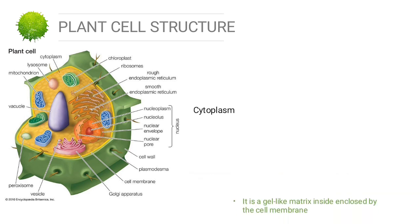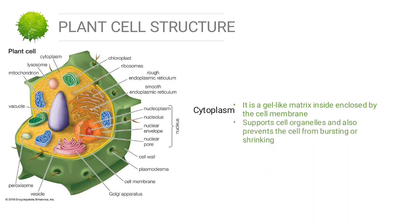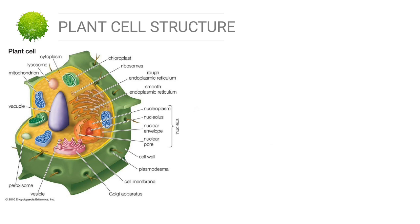The last part of the plant cell is the cytoplasm. It is a gel-like matrix enclosed by the cell membrane. The main function is to support cell organelles and prevent the cell from bursting or shrinking.